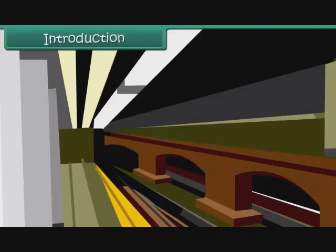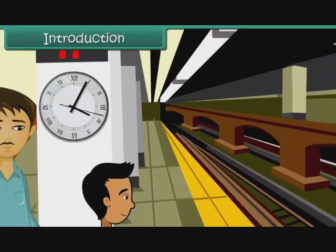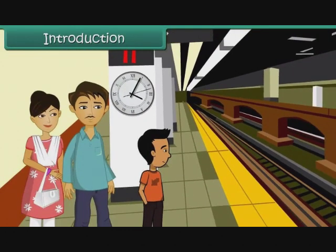Introduction. Abhishek is at the railway station with his parents. They are going for summer holidays to Mathurah.